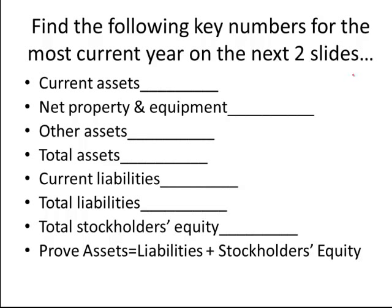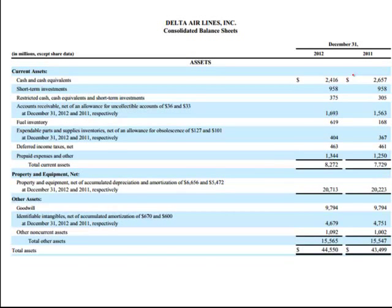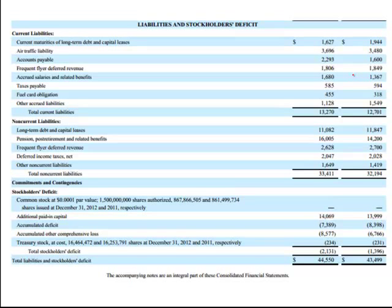Here's one more — find the key numbers. It's the balance sheet broken into two slides: Delta Airlines. Delta is very interesting. Notice its total assets are $44,550,000,000. You have their current assets, total assets, and net property and equipment — notice how much property and equipment they have. Now, looking at liabilities, it's not stockholders' equity but stockholders' deficit, because they don't have a positive ownership number — their ownership is in the hole. The balance sheet still balances, but their liabilities exceed their stockholders' equity. Hopefully you found these numbers.